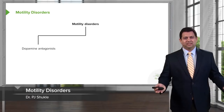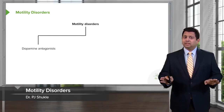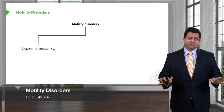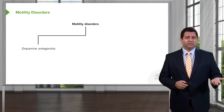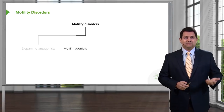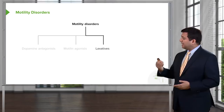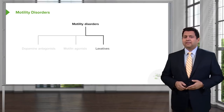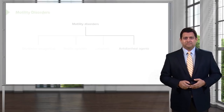Let's move on to the motility disorders. Motility disorders can be treated by several agents: the dopamine antagonists, the motilin agonists, the laxatives, and the antidiarrheal agents.